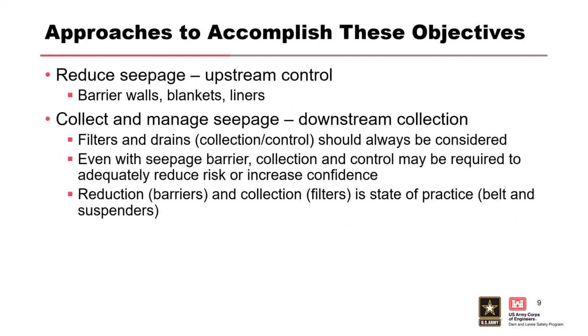There are two ways to approach seepage control, or both. First is reducing seepage — some sort of upstream control: barrier walls, blankets, liners, core trenches. The second is the downstream collect-and-manage side: filters and drains, which should pretty much always be considered. If you have large seepage flows and forces, you need barriers to reduce them, but in rehab you usually start with filters and drains. And really, the state of the practice is to have both — that belt and suspenders approach — because then you're redundant. We're talking about life safety, and if one has weaknesses, the other can address them.